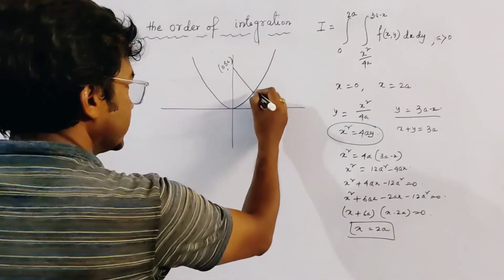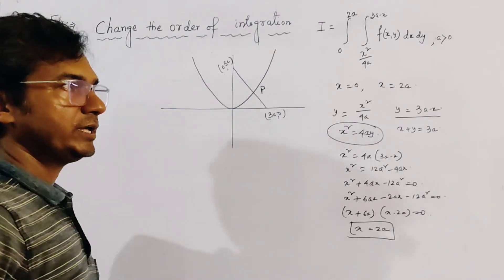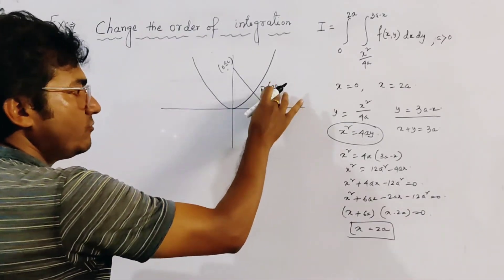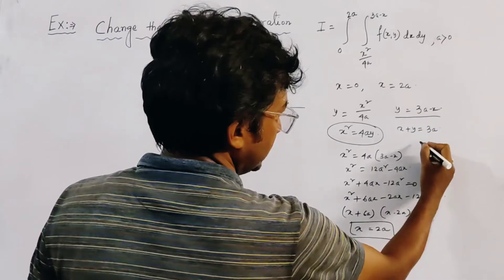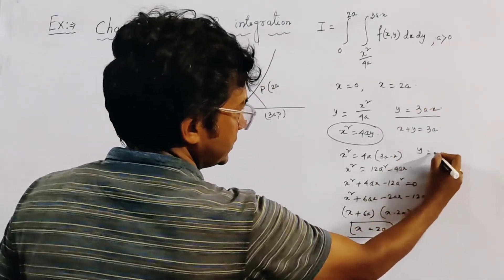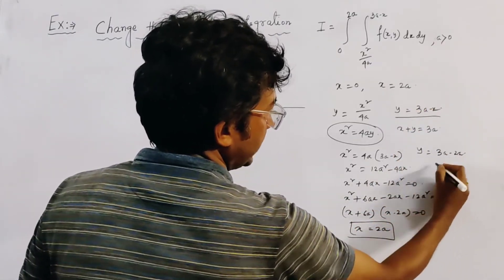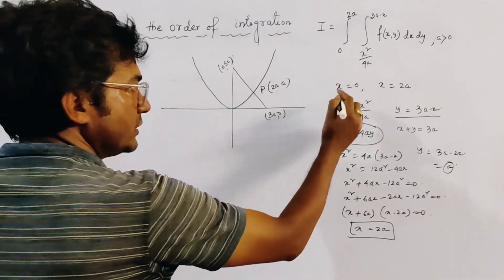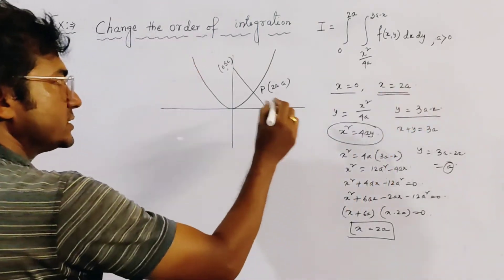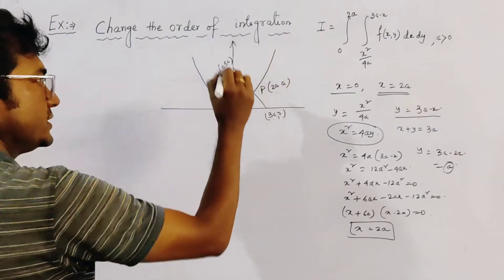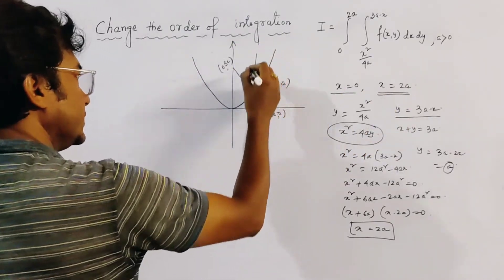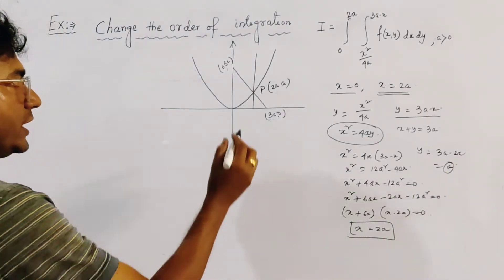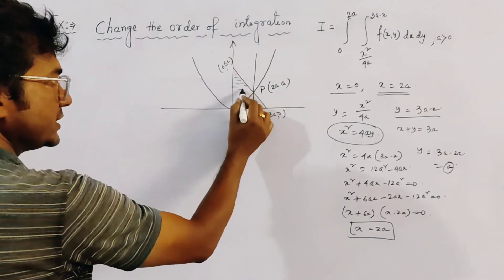So the point of intersection, named P, has x equal to 2a. The value of y is y equal to 3a minus 2a equal to a, so P is at (2a, a). Our region of integration is defined by x equal to 0 (the y-axis) and x equal to 2a (a line parallel to the y-axis), and the shaded region between the parabola and straight line.